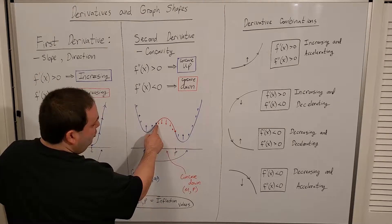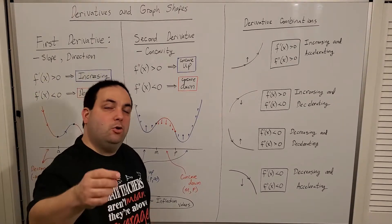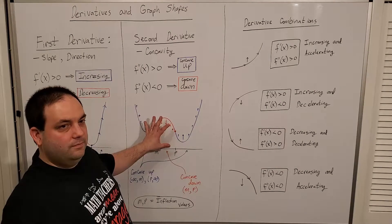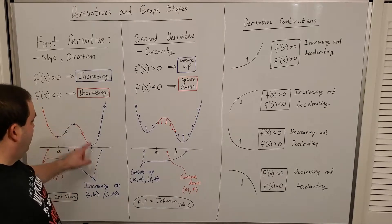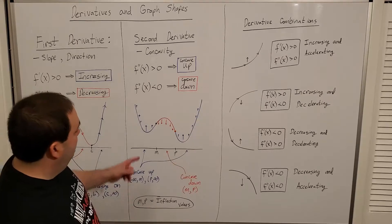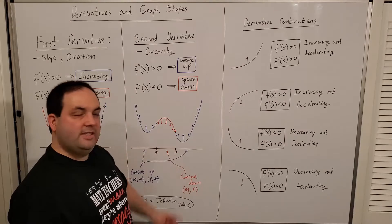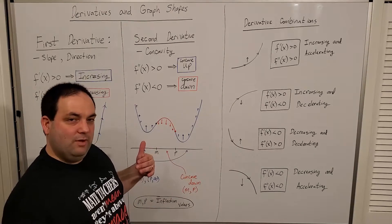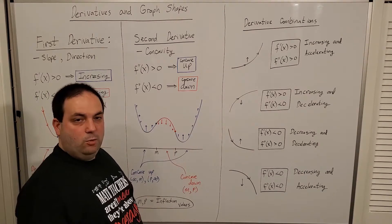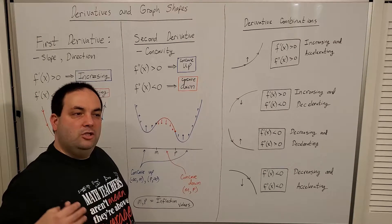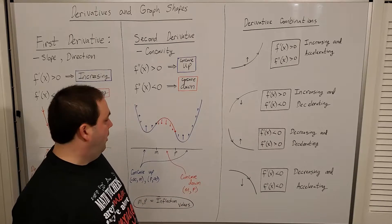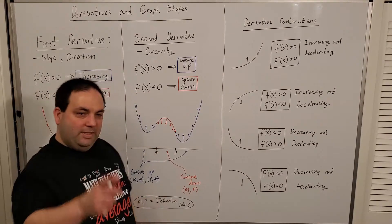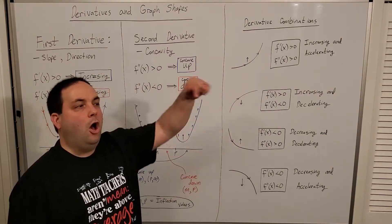The m and p values on the chart are not critical values of the function itself — those are where the derivative equals zero or is undefined. Instead, m and p are inflection points, or inflection values. Inflection values have the same meaning as critical values, but for the second derivative. These are locations where your second derivative equals zero, and you have a moment to try to switch the direction of concavity. Inflection values are basically critical values of the first derivative.